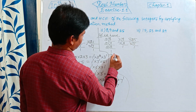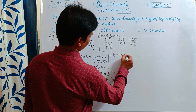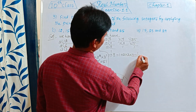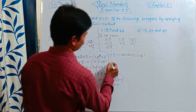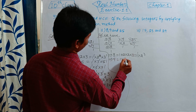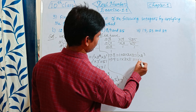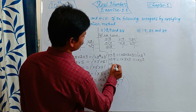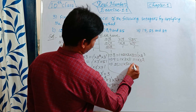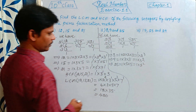So write the factors. 8: 1 × 2 × 2 × 2, that is equal to 1¹ × 2³. Next, 9 factors: 1 × 3 × 3, that is equal to 1 × 3². Next, 25 factors: 1 × 5 × 5, that is 1 × 5².